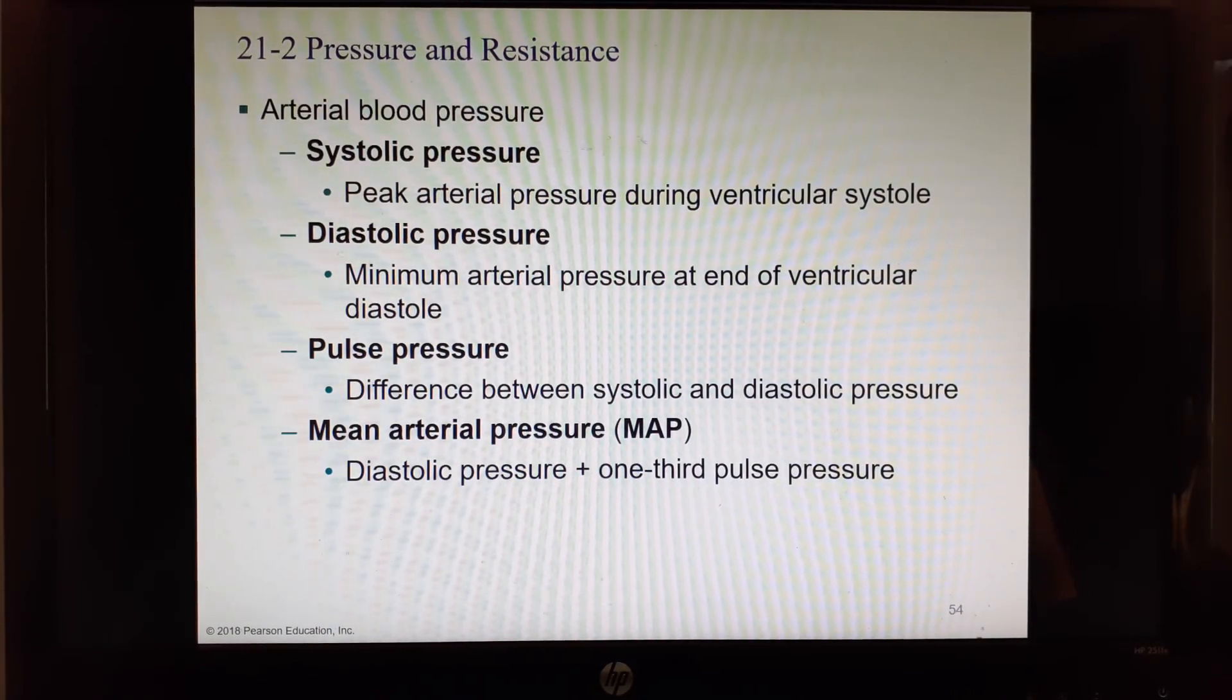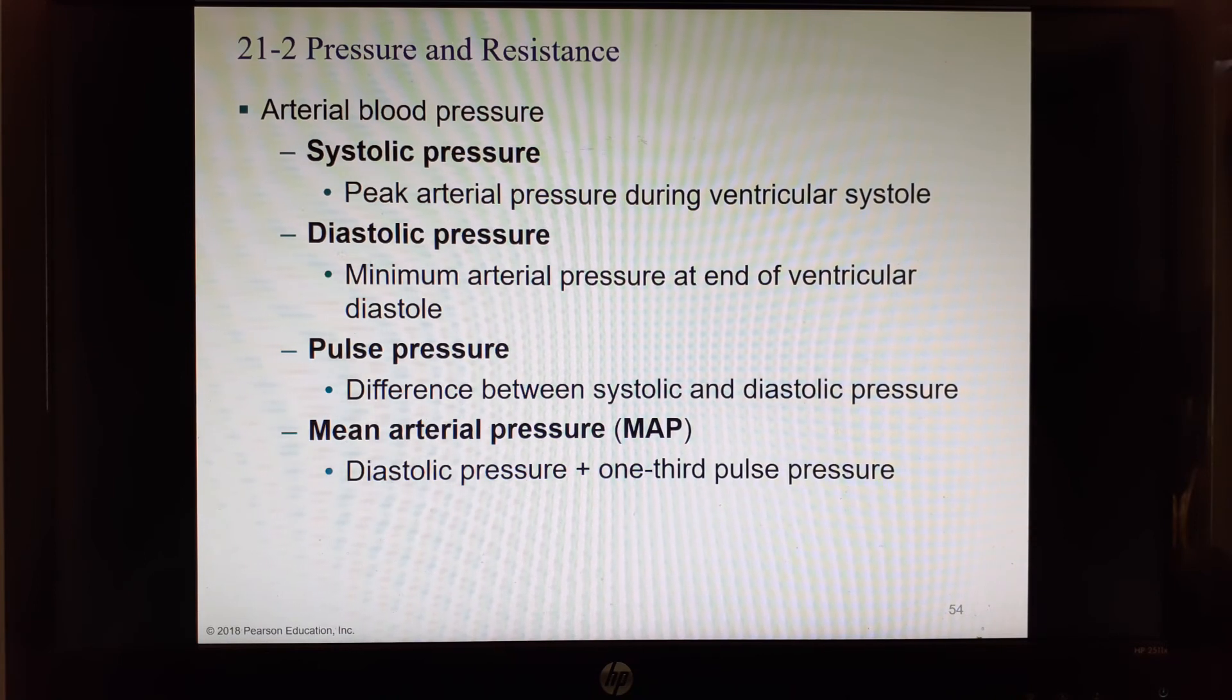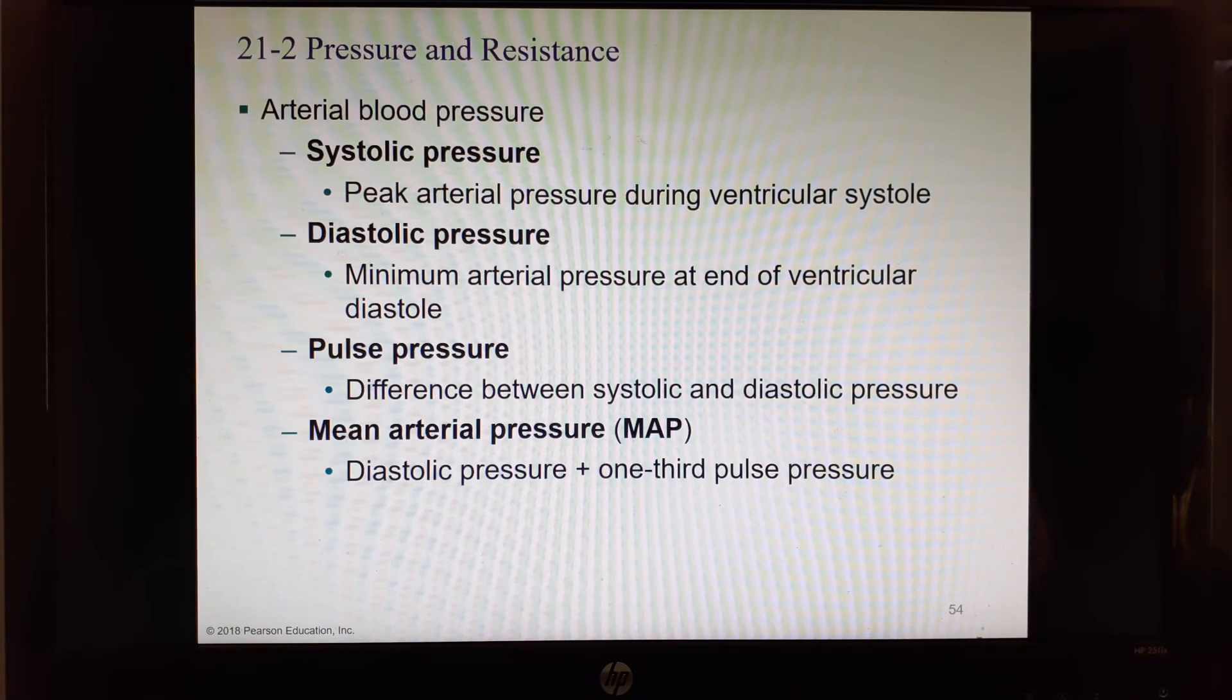Let's go back to those pressures. When we're looking at arterial blood pressure, remember that's where it's highest, we're just leaving the heart. There is the systolic pressure and the diastolic pressure. Remember from the last chapter, systole is squeezing of the heart. Diastole is relaxation. So we have two pressures. When the heart ventricles are squeezing, the blood pressure goes up. That's the peak pressure. That is your systolic blood pressure. And then when the ventricles relax, the blood pressure drops down. That is your diastolic pressure.